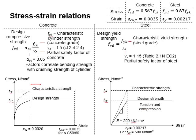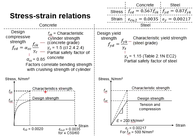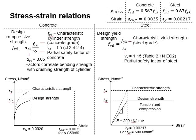The characteristic strength represents the grade of the materials, such as the concrete grade and steel grade. The concrete grade is determined by the characteristic cylinder strength, FCK. The steel grade is represented by the characteristic yield strength given by the manufacturer, FYK.